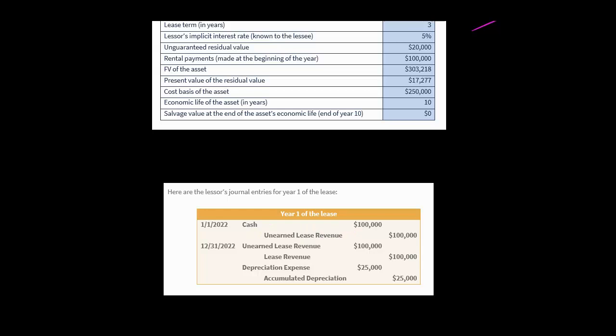Why unearned lease revenue instead of lease revenue? Because they are only going to recognize lease revenue at the end of the year, when the lessee has actually used the equipment that was rented to them. So when they receive the cash, they recognize unearned lease revenue as a liability. Then at the end of the year — December 31, 2022, end of year one — they reduce the unearned lease revenue liability and increase lease revenue, because now that revenue has been earned.